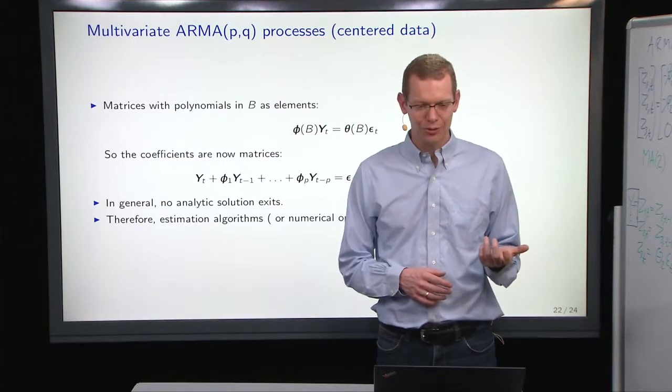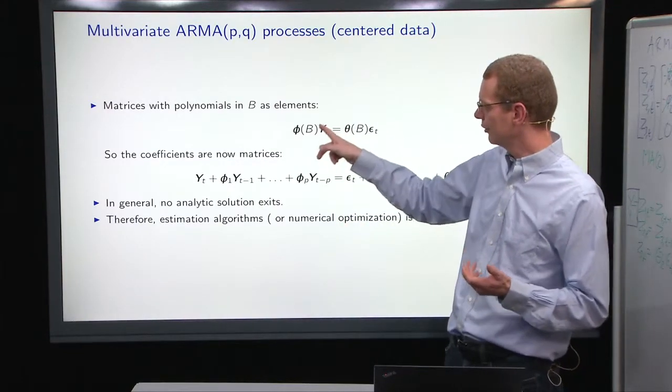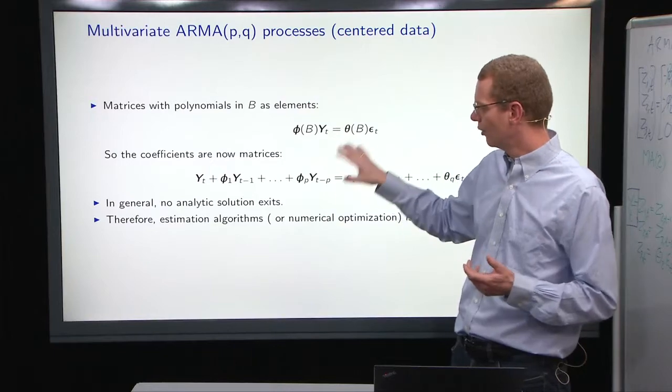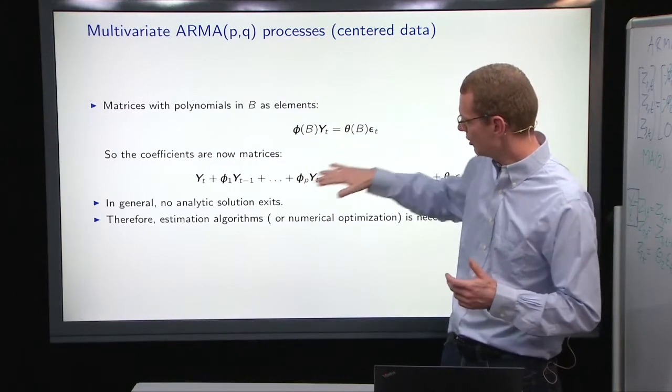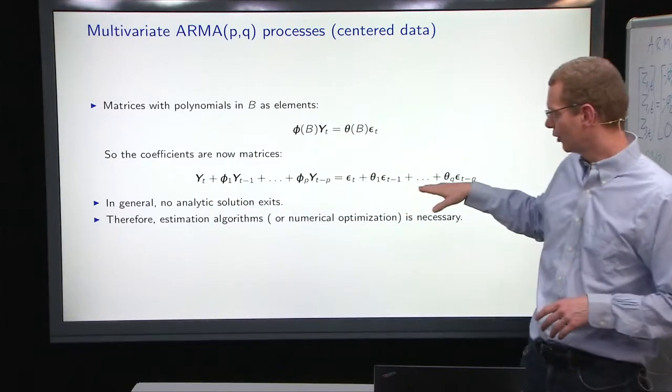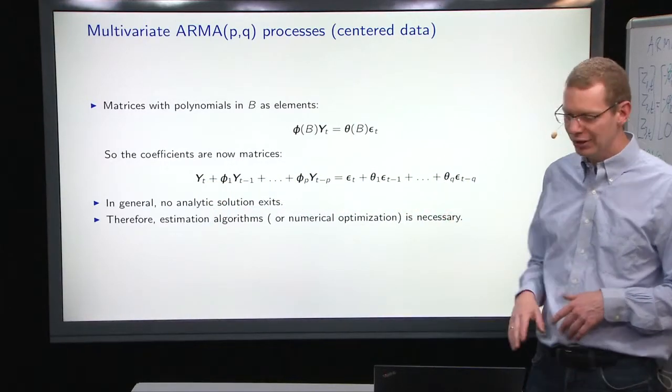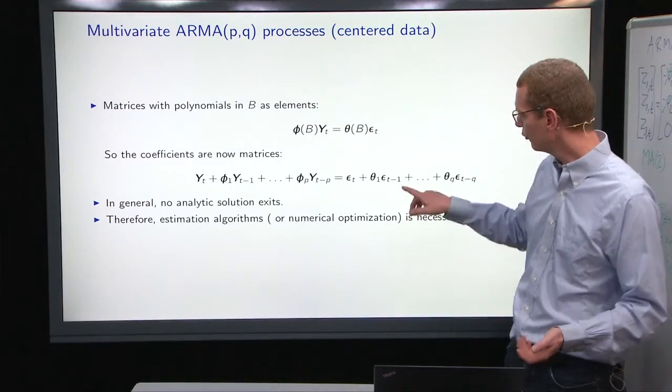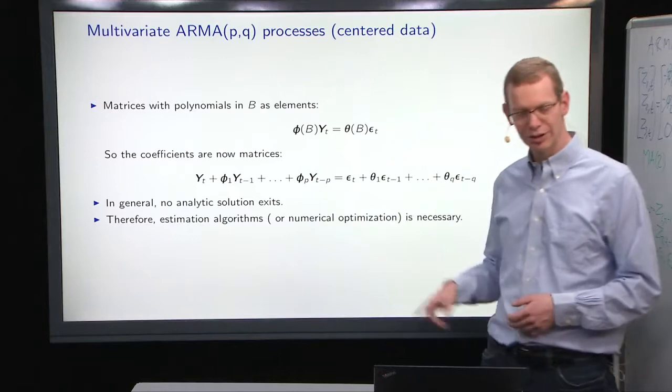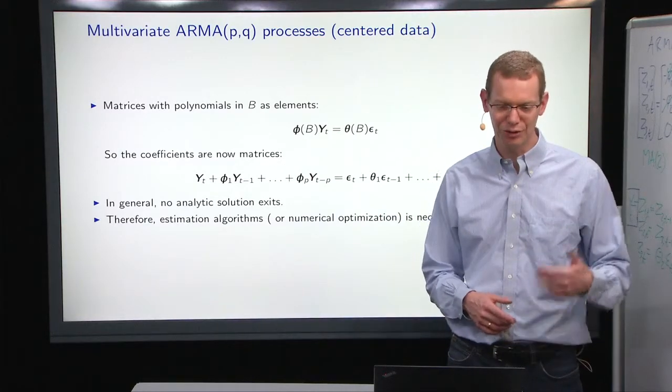So, how to do things? If you have centered data, so there's no mean value, as I said before, you can have this operator representation or you can have it with coefficient matrices spelled out like this. In general, when you have this, there is no general analytic solution how to find these coefficients except for the autoregressive model.